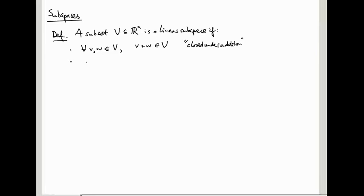The second condition is it's closed under rescaling, so for all V in V and all lambda in R, lambda V is in V. So you should think of this as some sort of flat, plane-like object inside n-dimensional space.